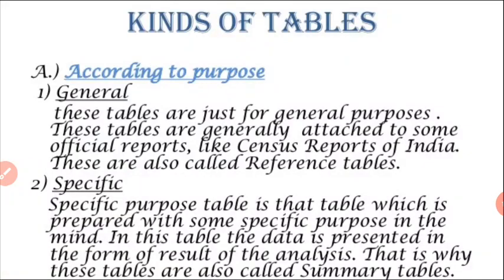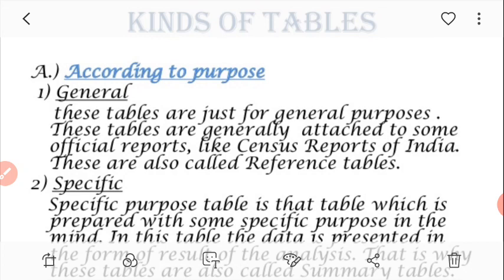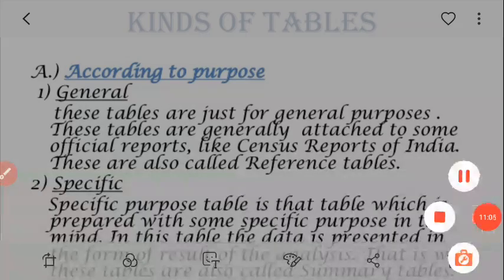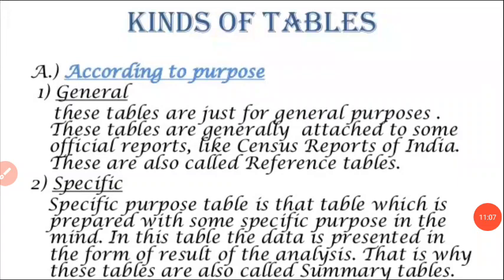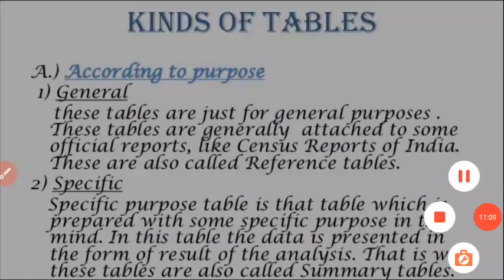Now here you can see the kinds of table. There are two types — general and specific. General tables are not based on a specific result; they are for purposes like official reports, census methods, etc. Specific tables are for individual work. Thank you students — prepare your notes, and if anyone has a problem, you can ask me.